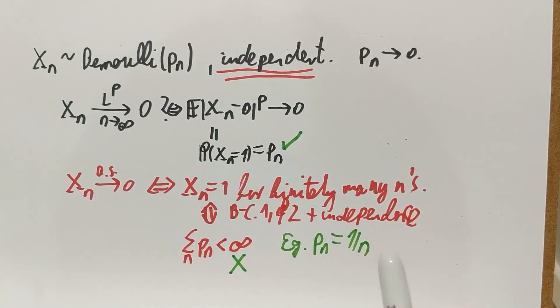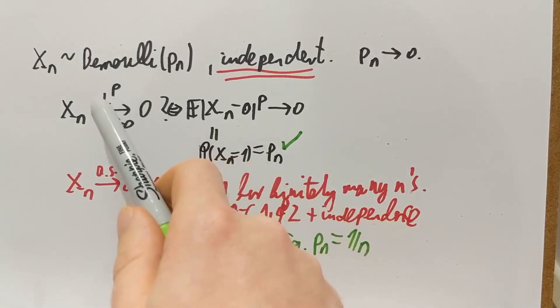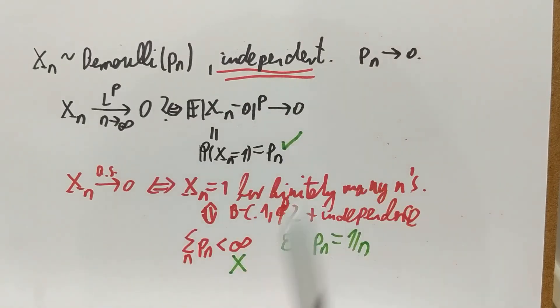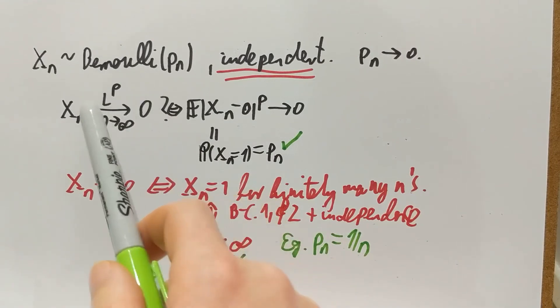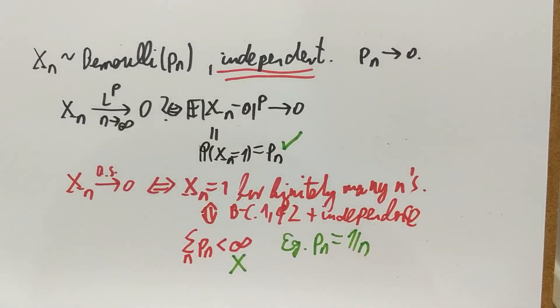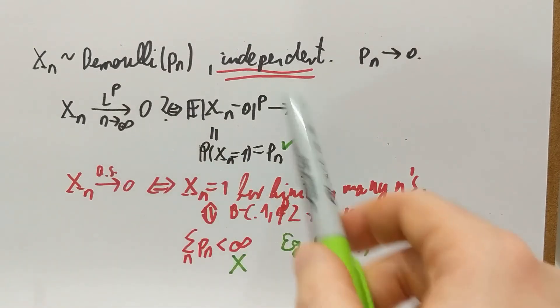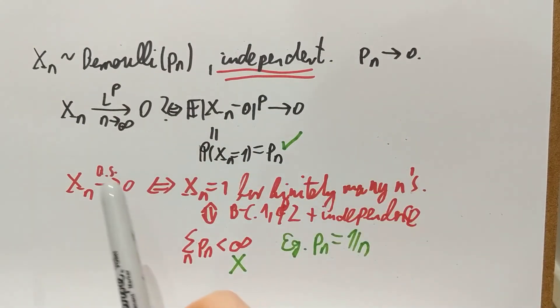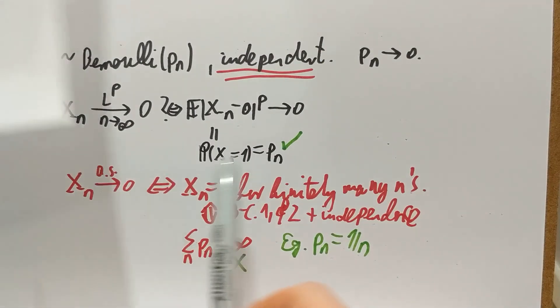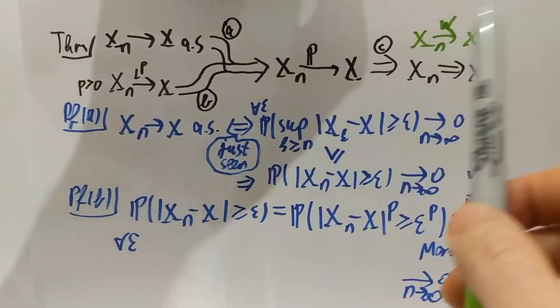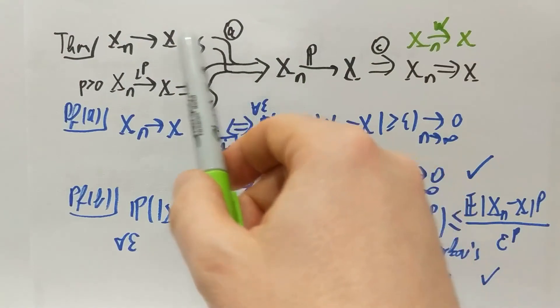So for Pn equals one over n, we do have convergence in LP and in probability. Prove at home that LP in this case is equivalent to in probability. So for Pn equals one over n, we do have convergence in LP and in probability, but we do not have almost sure convergence. So that is a counterexample for this reversed implication.